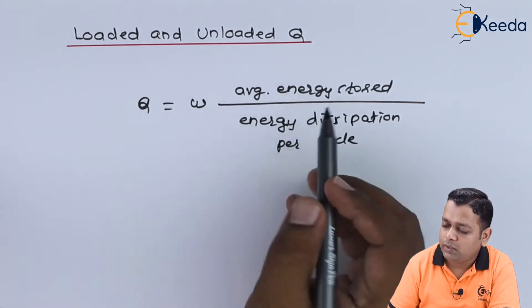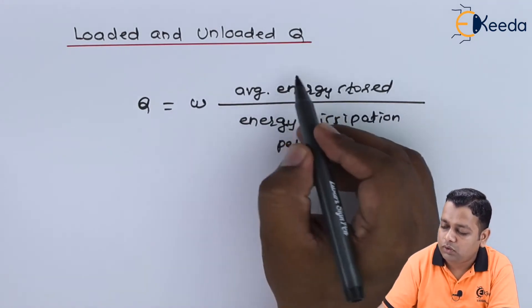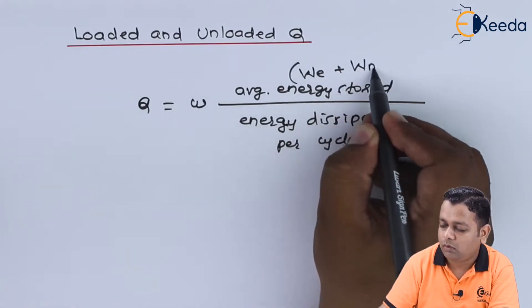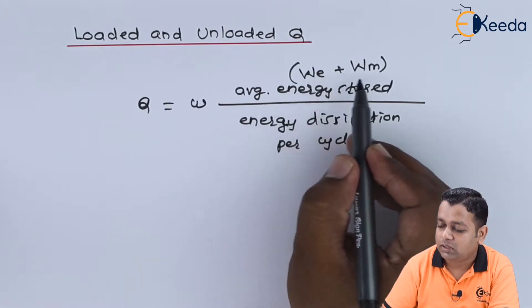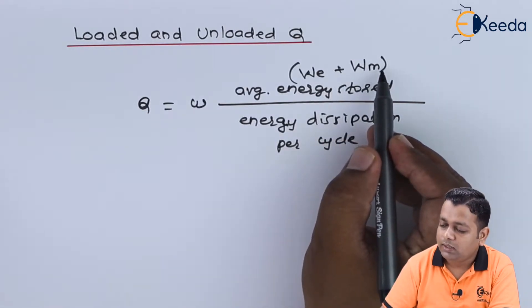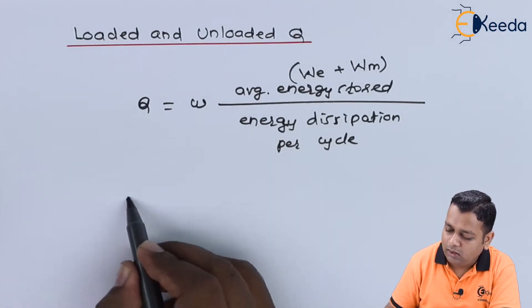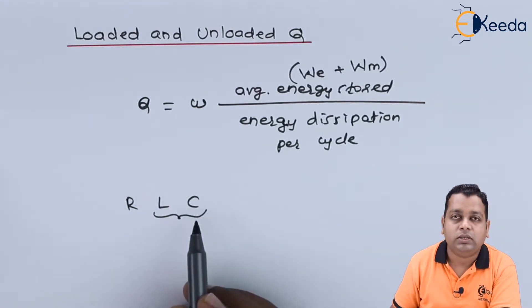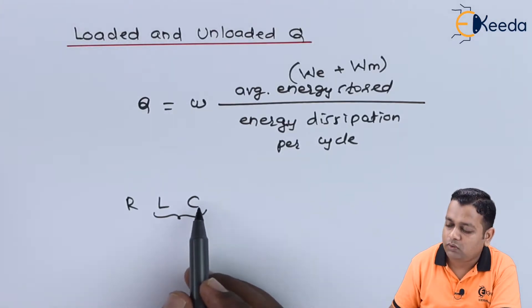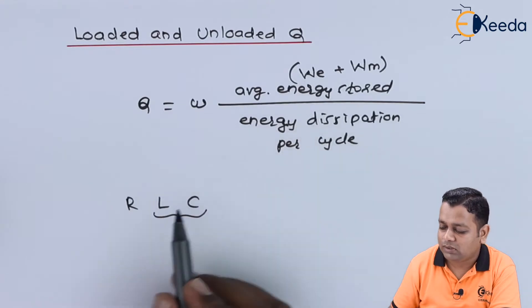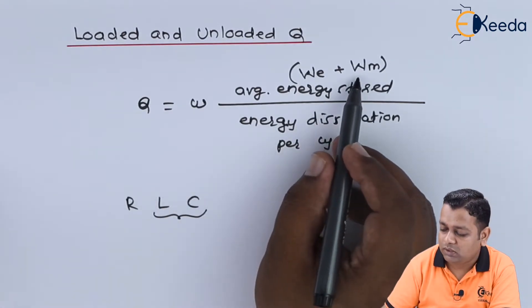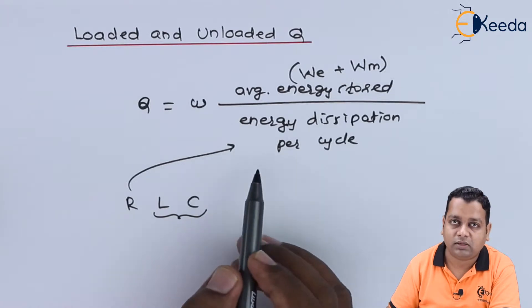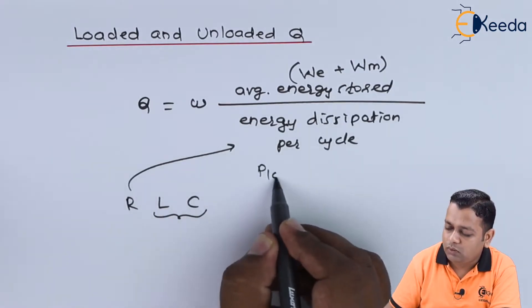The average energy stored includes both the electric form W_E and the magnetic form W_M. The capacitor confines to electric energy storage, the inductor confines to magnetic energy storage, and R is responsible for energy dissipation losses — P_loss — per cycle.